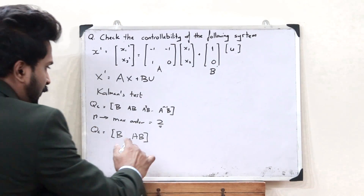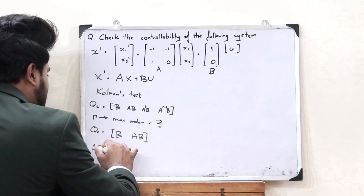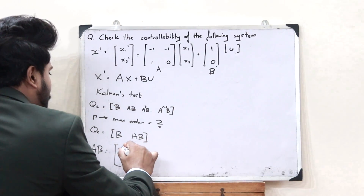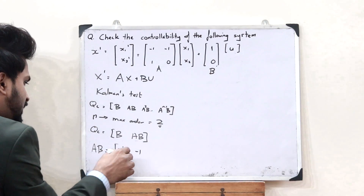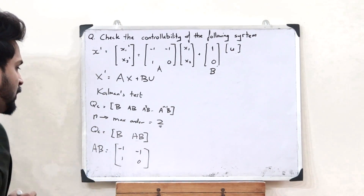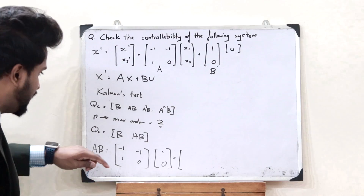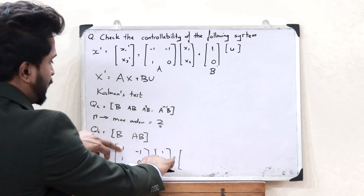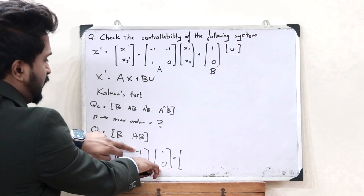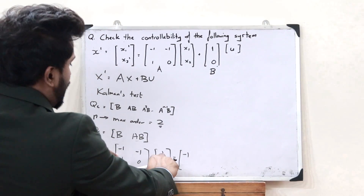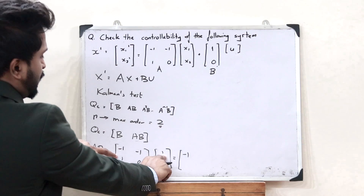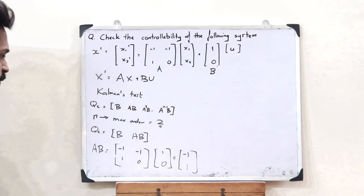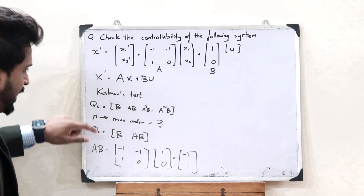We have to find the value of AB. AB is nothing but the matrix A, which is [[-1, -1], [1, 0]], multiplied into B, which is [1, 0]. This equals: first term: (-1)(1) + (-1)(0) = -1; second term: (1)(1) + (0)(0) = 1. So AB = [-1, 1].